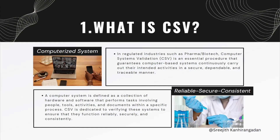In regulatory industries such as pharma and biotech, computer system validation is an essential procedure that guarantees computer-based systems continuously carry out their intended activities in a secure, dependable, and traceable manner. Now, what is a computer system? Computerized system and computer system are two almost similar terms, but there's a slight difference. Computer system is software and hardware, while computerized system includes the people, the tools, the activities, and the documents around a specific process.